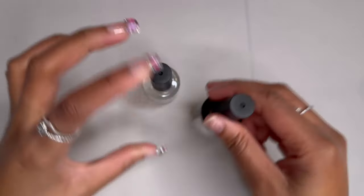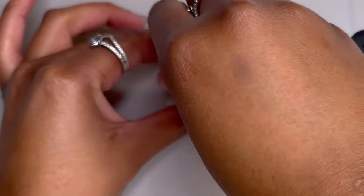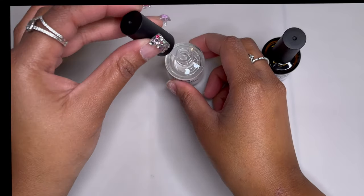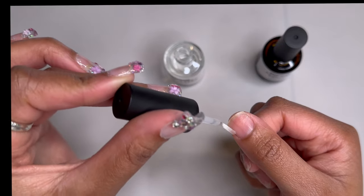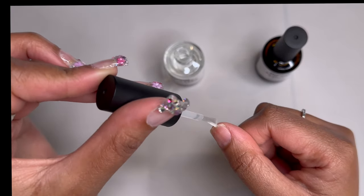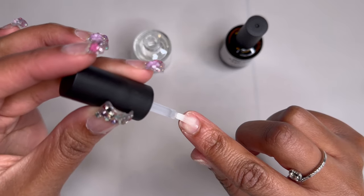After that step we are going to go in with some nail dehydrator and some nail primer. We use the nail dehydrator first. The nail dehydrator is going to clean the nail surface and also remove any oils from the nail plate.